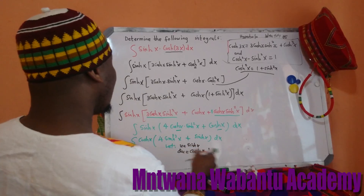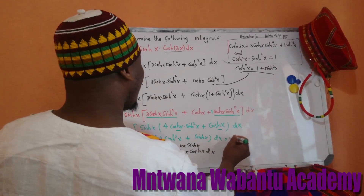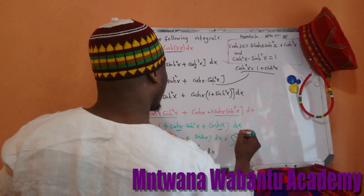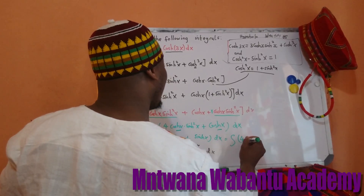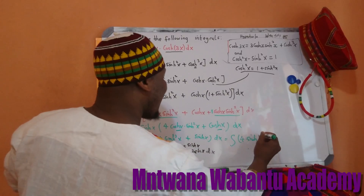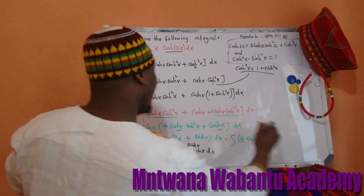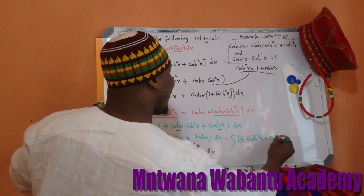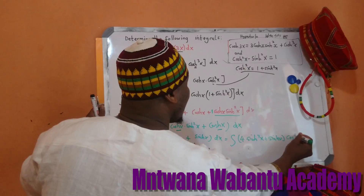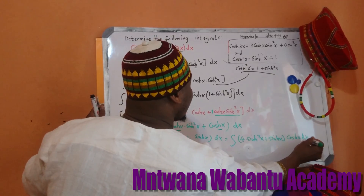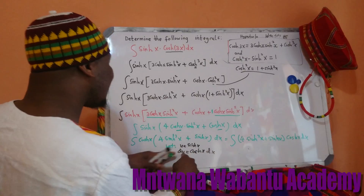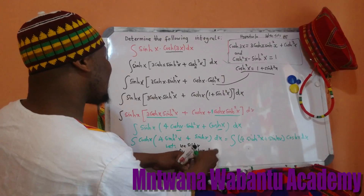Let me rearrange this carefully. So this is the same as the integral with cosh in front: 4sinh³(x) plus sinh(x), times cosh(x) dx. Now we let u equal sinh(x), and differentiating gives du equal cosh(x) dx.